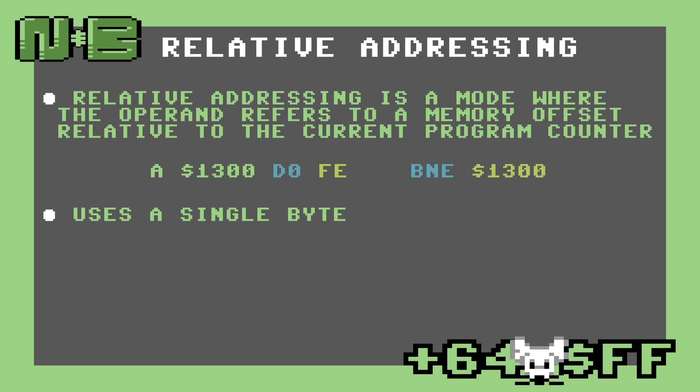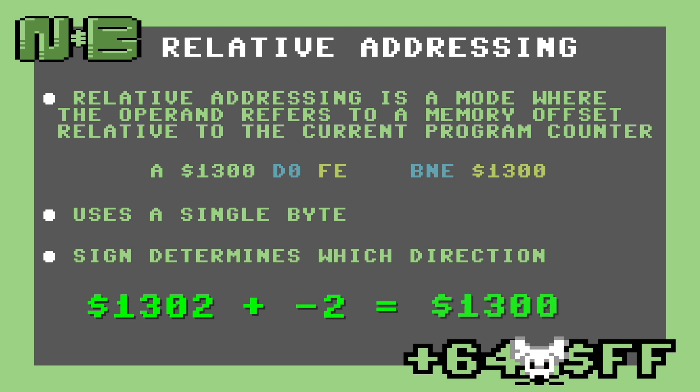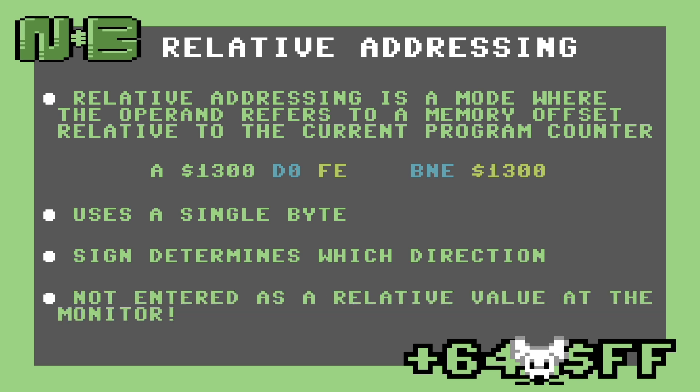This byte is actually a signed value, whose magnitude indicates how far to branch and the sign indicates which direction. Effectively, the address of the program counter and the value of the operand are added together to produce the address to branch to. Note that we don't enter the address in relative notation — the assembler can do that for us, so we don't have to think about it.